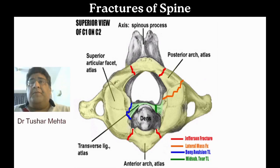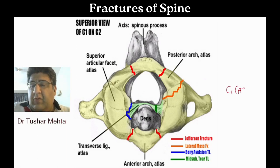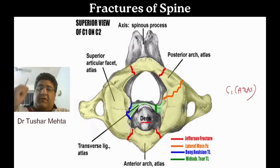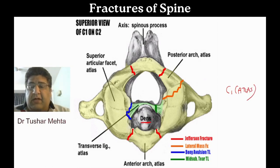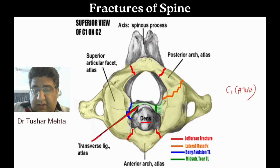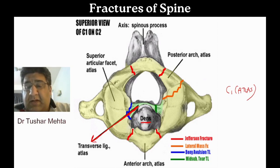Let's take a look. By now you must have understood that we are dealing with C1 — the atlas. The dens or odontoid process comes up from the axis and fits into the atlas, making the atlanto-axial joint. This green structure here is what is called the TAL — the transverse atlantal ligament.